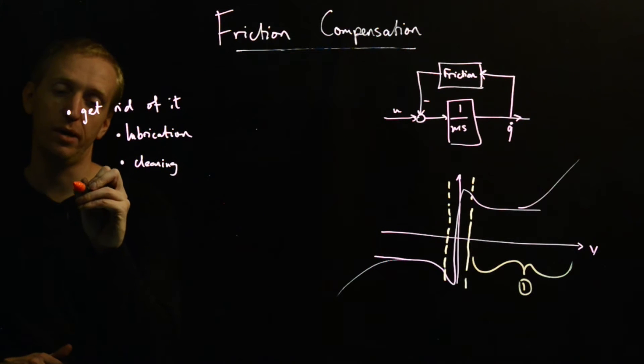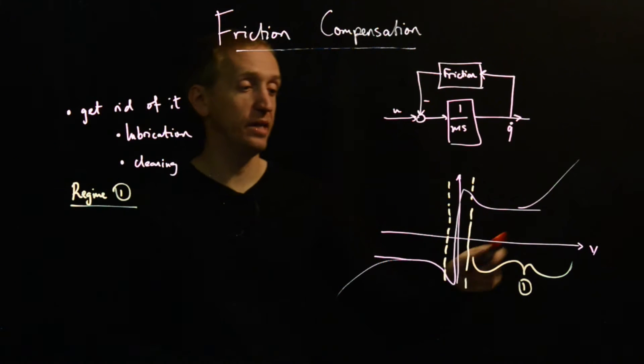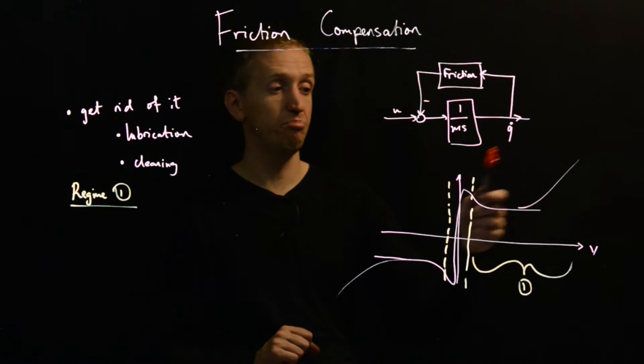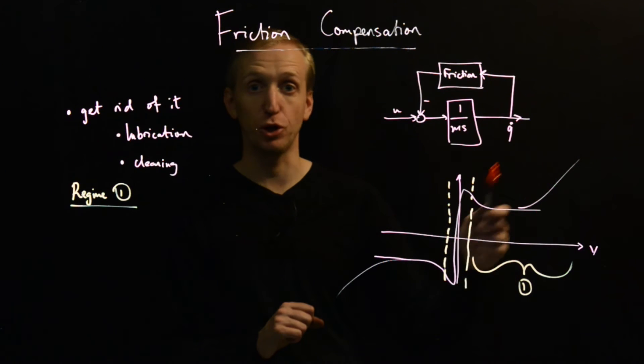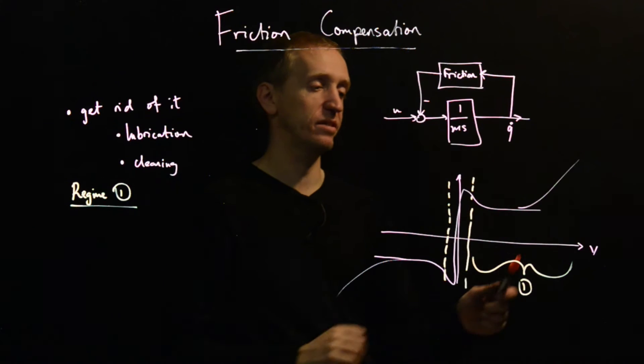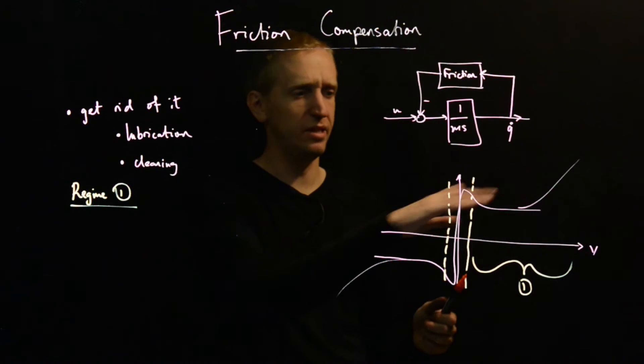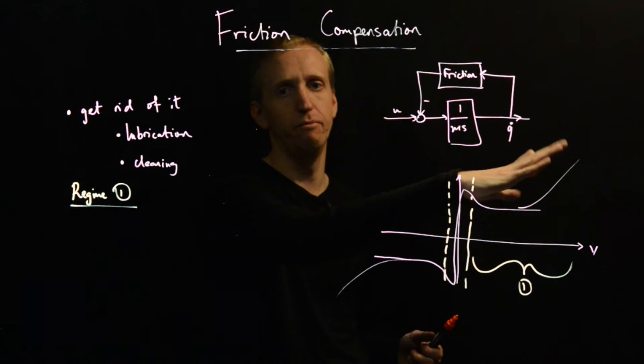If we're in regime 1, what's the issue? The issue is that we have some disturbance friction force, and it varies in its magnitude depending on the velocity we're at. But you can see it's not really varying that much.